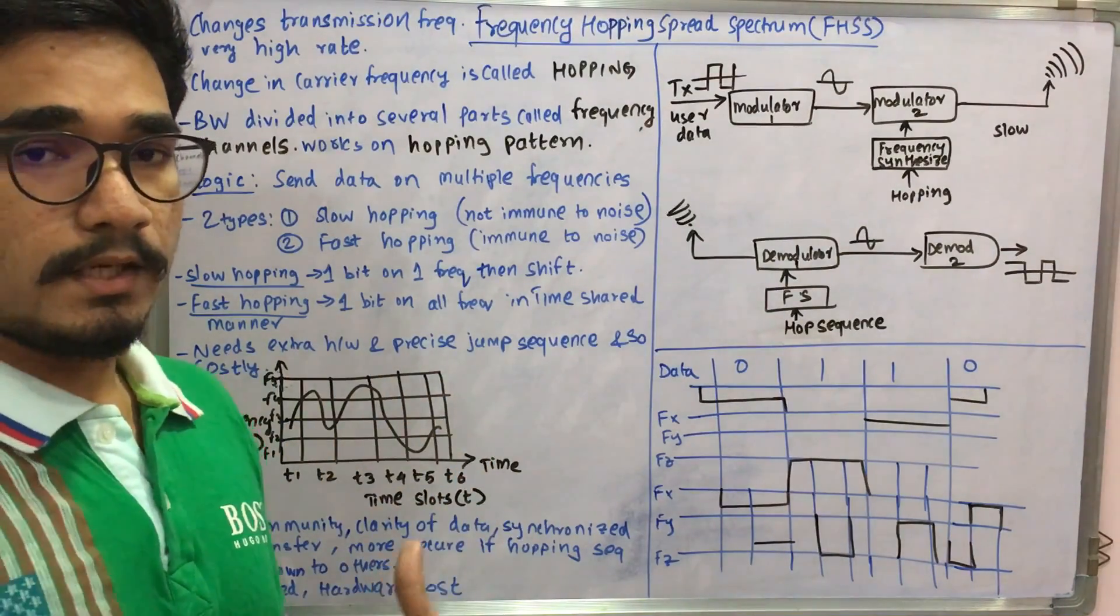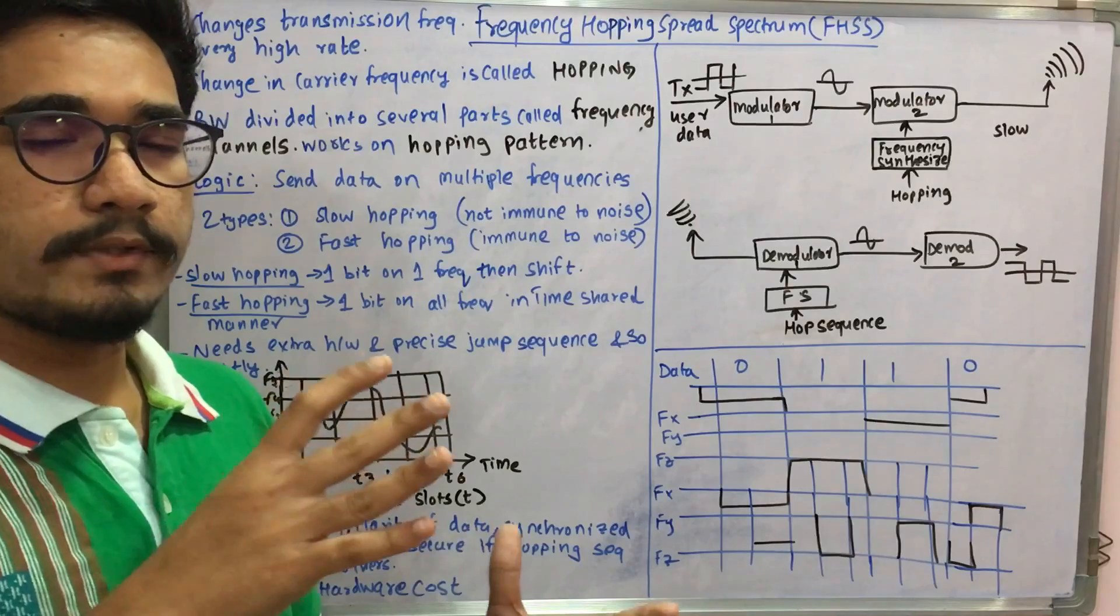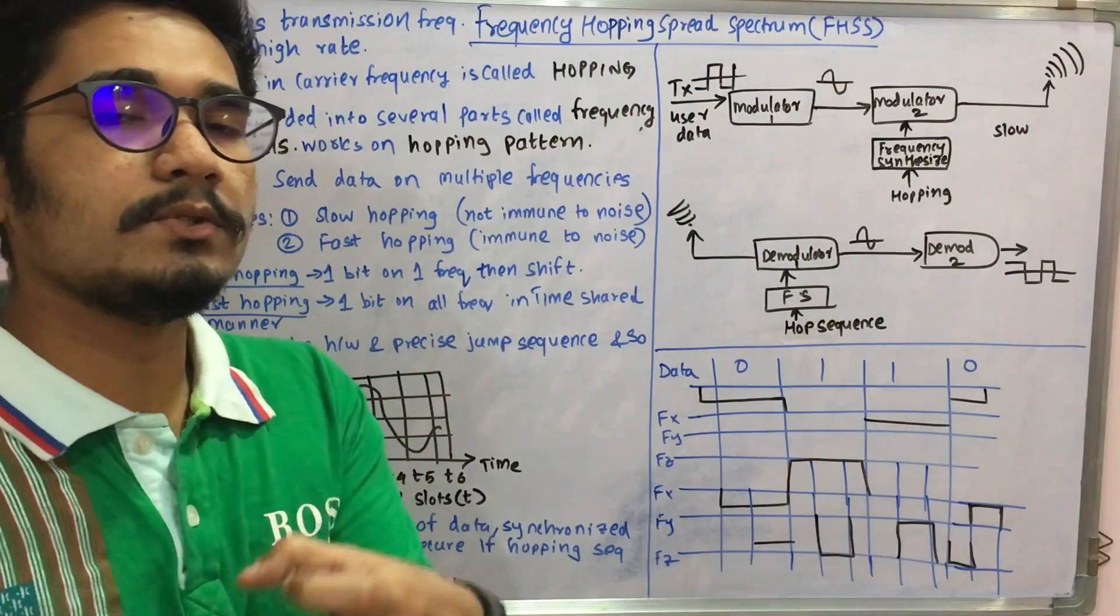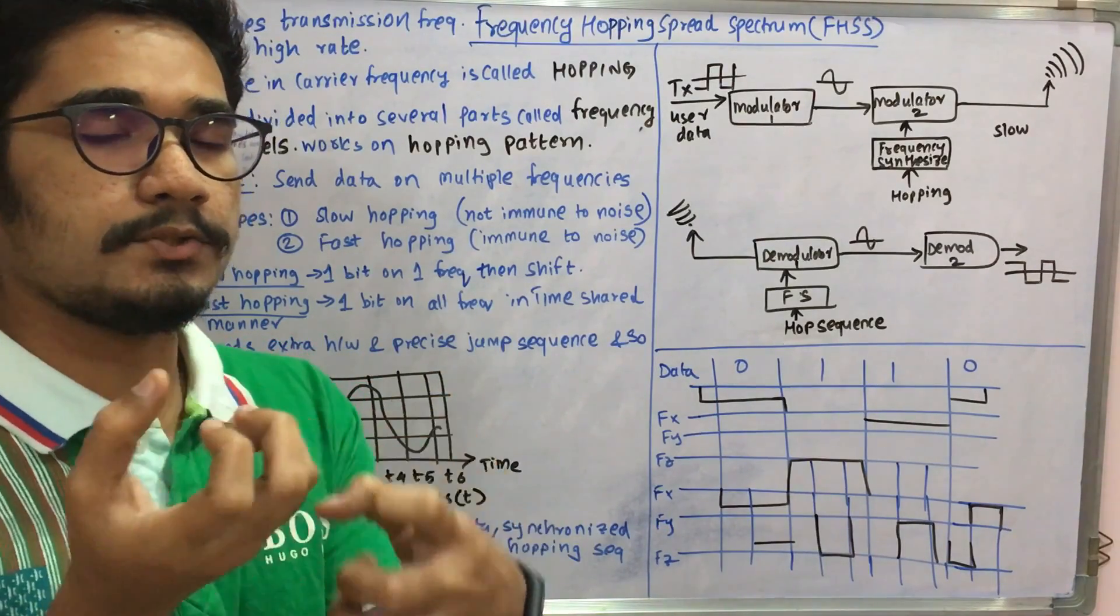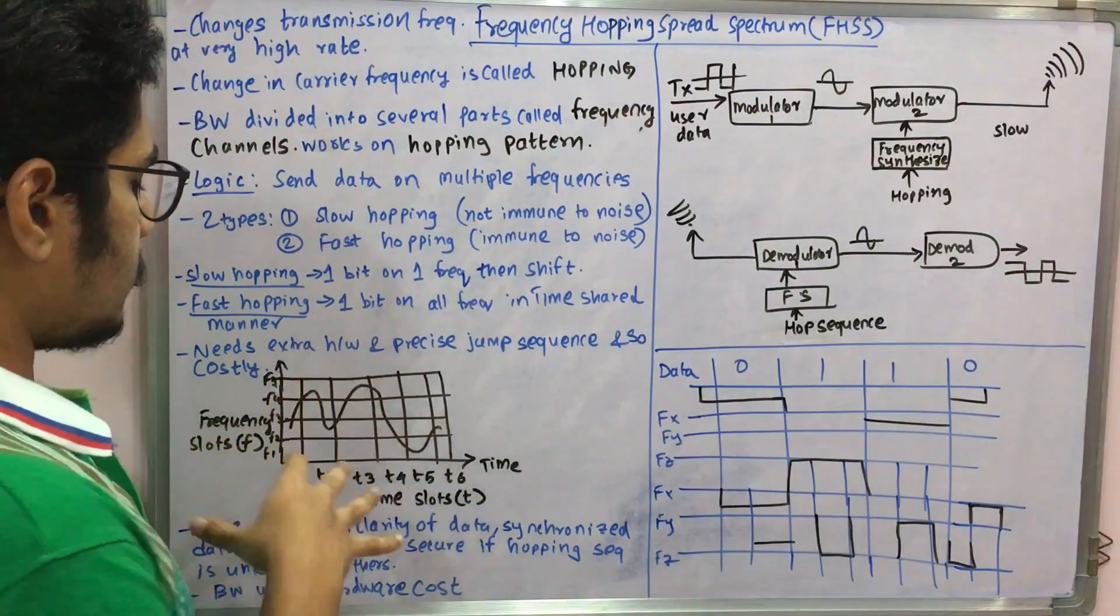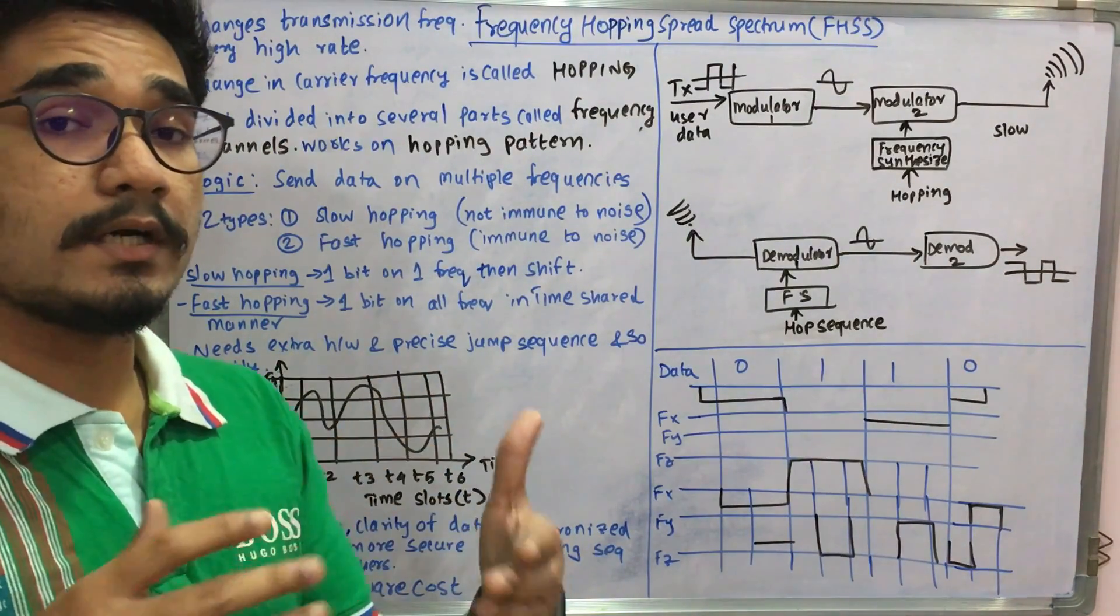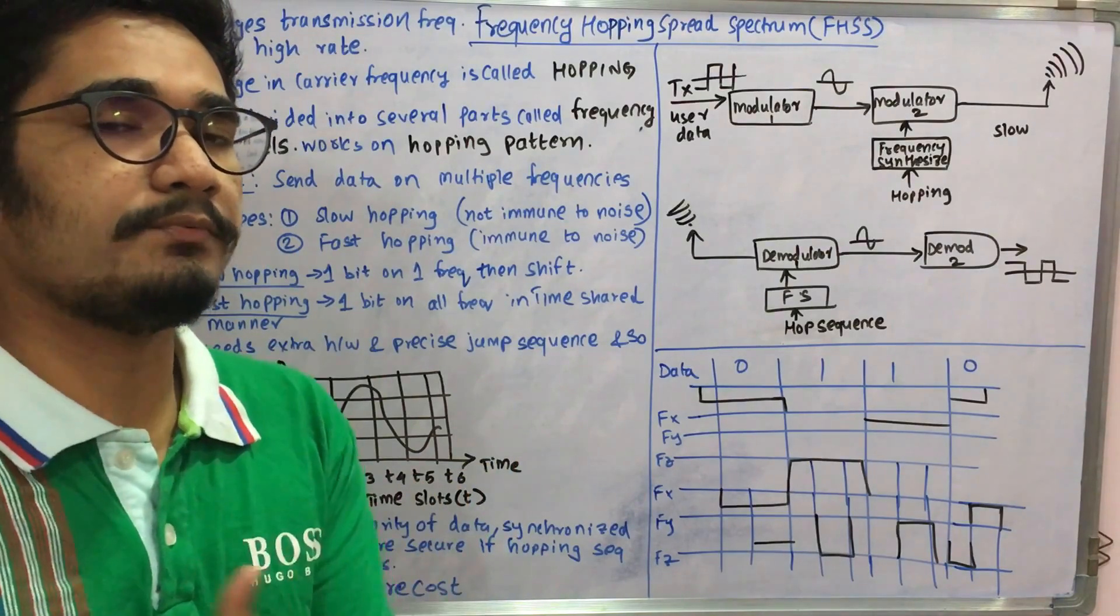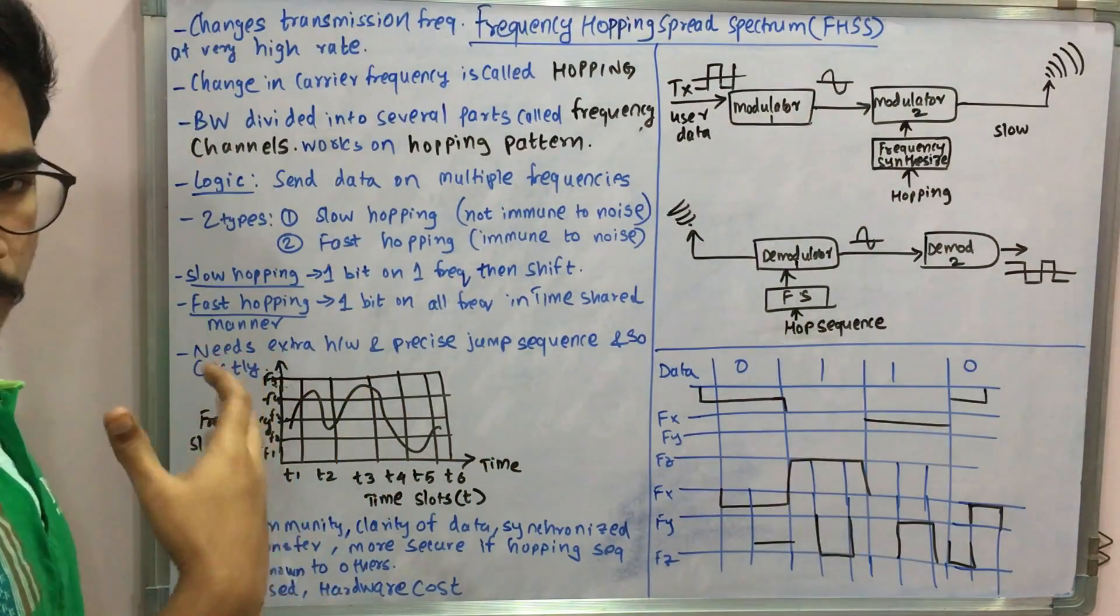then at the next time interval it would be shifted. It's not very easy to crack the hop pattern and decrypt the data. You need to have precise careful understanding of how the frequency shifted at regular intervals.